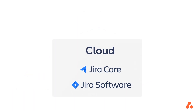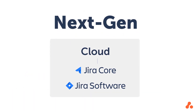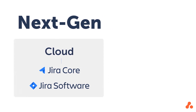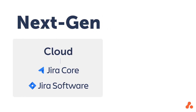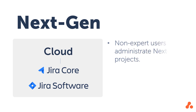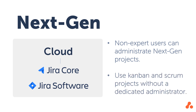Jira Cloud, and specifically the next-gen projects, are the Atlassian option for small businesses or larger businesses who want to give their teams more autonomy. Jira next-gen packages up a whole lot of administrative power into a simple user interface that non-expert users can handle straight out of the box. That means anyone can take advantage of Jira's industry-leading work organization templates, Kanban and Scrum, without the need for dedicated admins.